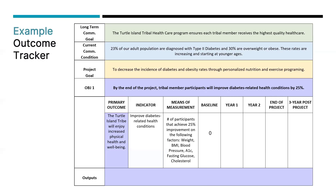The baseline for year one will be zero — everybody is starting at ground zero, so there's no improvement or decrease yet. For year one, we're anticipating that 10 people will achieve at least 25% improvement. In year two, 20 people will have achieved the 25% improvement — this is cumulative, including the 10 from year one and 10 additional from year two.